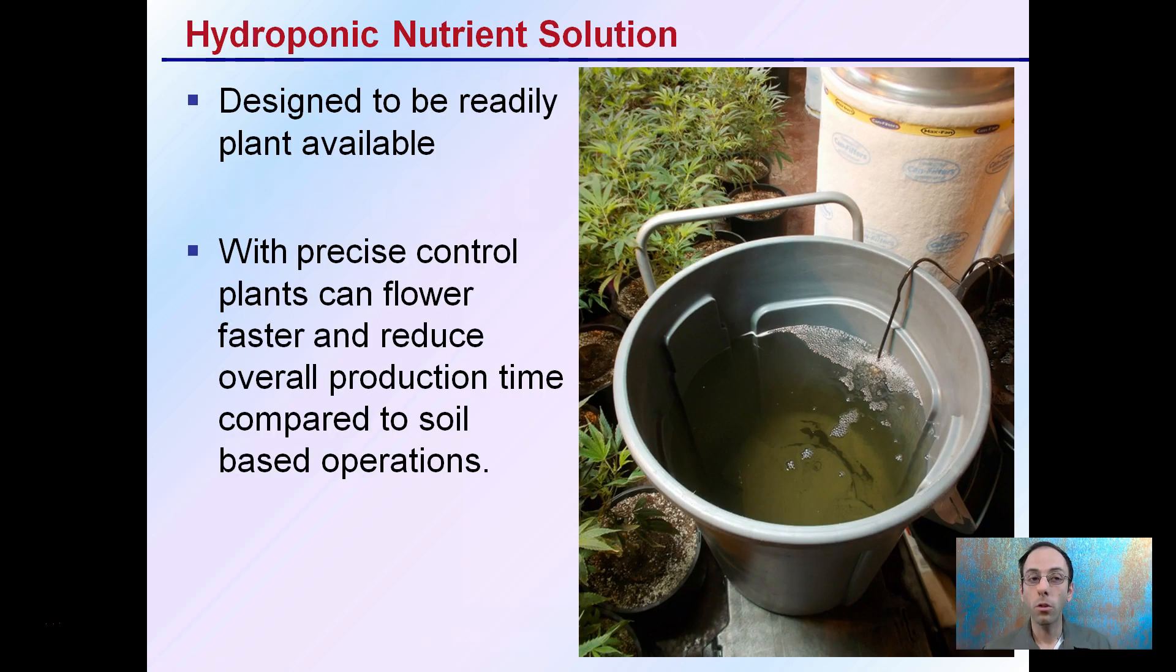Hydroponic nutrient solutions are designed to be readily plant-available. With precise control over plants, they can flower faster and reduce the overall production time compared to soil-based operations. These nutrient solutions are designed to supply the plants with nutrients that are available very quickly.